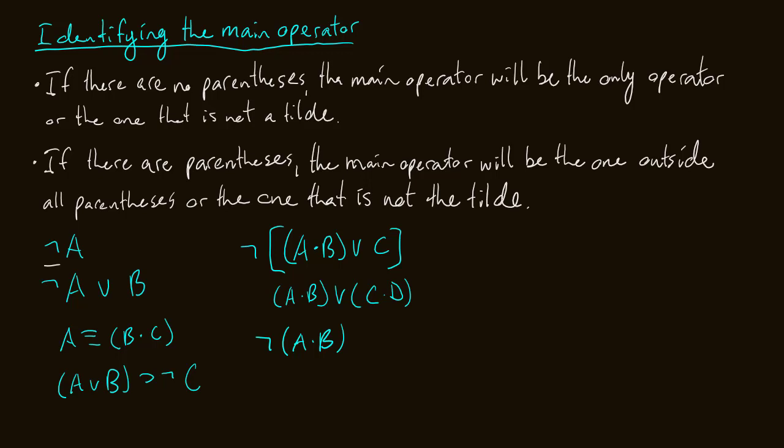Now we have ~A∨B. Again, no parentheses. We have two operators: the tilde and the disjunction, the wedge. We want the one that is not a tilde, so the wedge is our main operator. This would translate to something like: 'It is not the case that Alice goes to the store, or Barry does go to the store.'